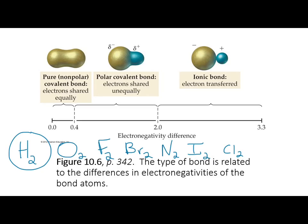If we take two hydrogen atoms bonded together, the electronegativity of hydrogen is 2.1 for both, so the electronegativity difference (Δχ) is 0. That means they share electrons equally — it's a nonpolar molecule.